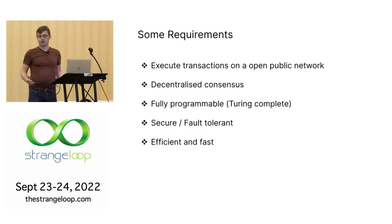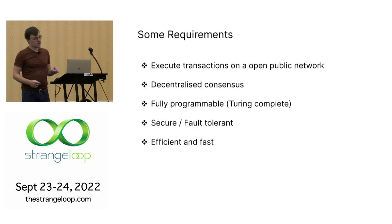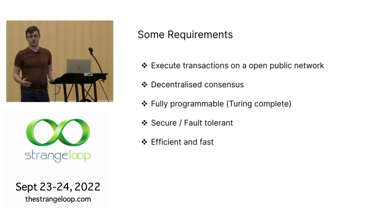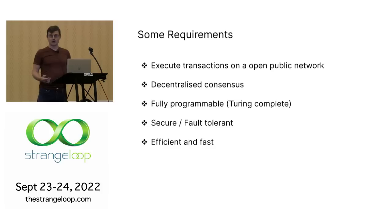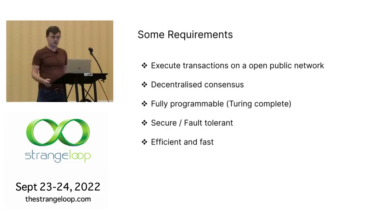So here are the requirements. We want to execute transactions on an open network with decentralized consensus — consistent, agreed-upon values with no single entity controlling the network state. We want it to be fully programmable and Turing complete, able to execute arbitrary code. It has to be secure and fault tolerant, since people are going to be malicious and try to break it. And of course, we'd like it to be efficient and fast — at least faster than my 800XL.